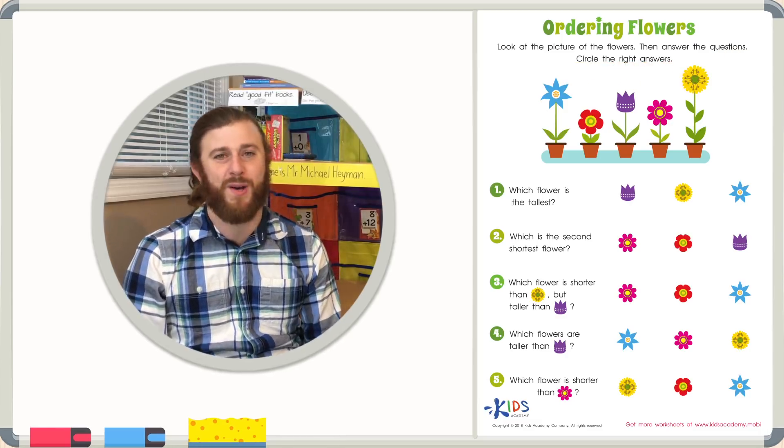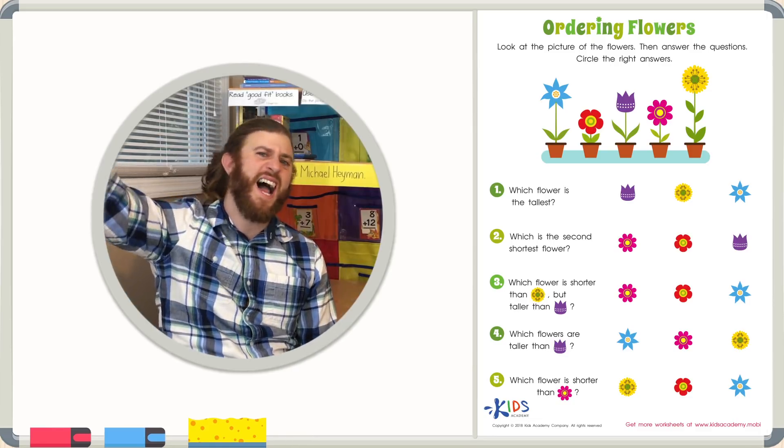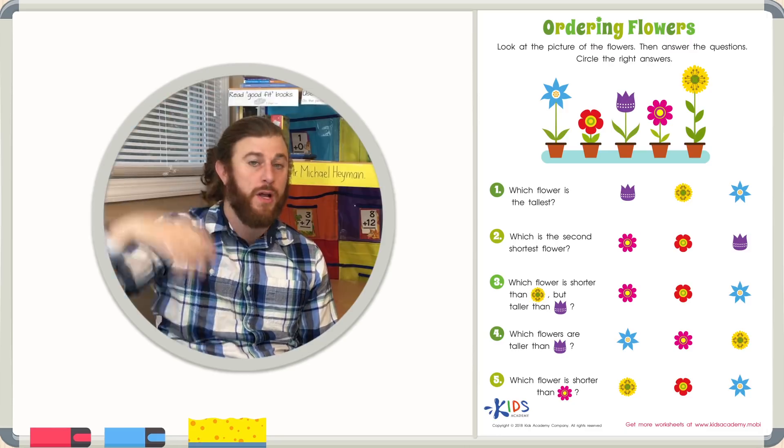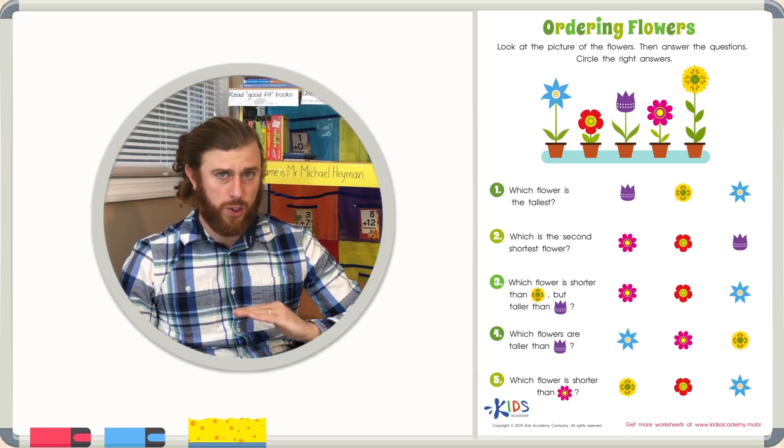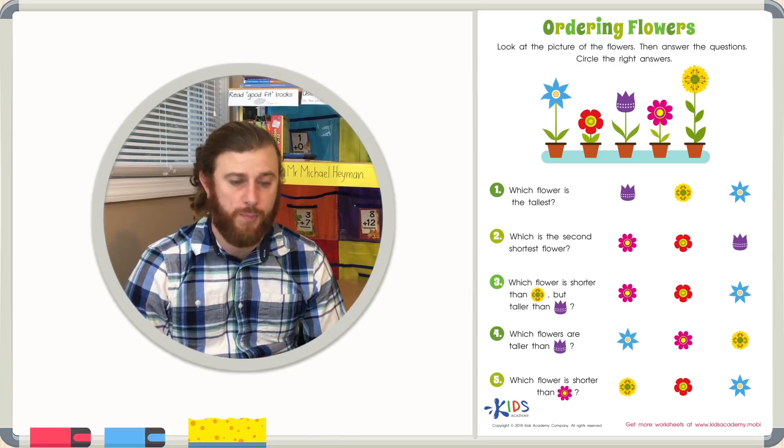First, let's remind ourselves, what does tallest and shortest mean? Well, tallest means it's the highest or the furthest from the ground. And shortest means it's the closest to the ground or the smallest. Let's get started with these word problems.